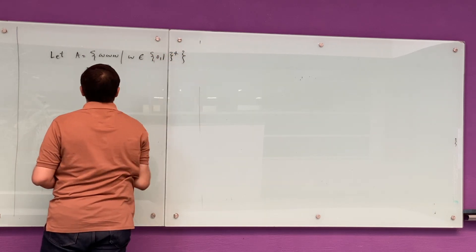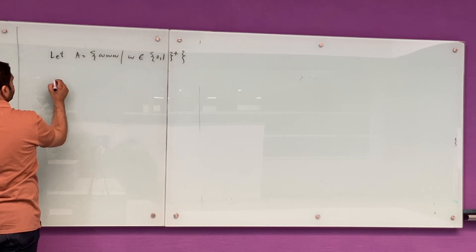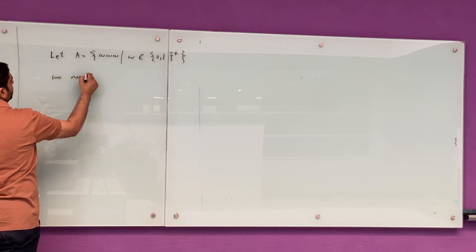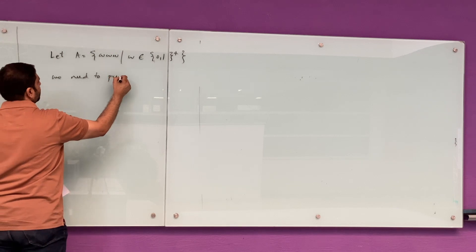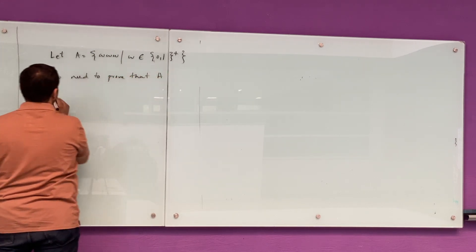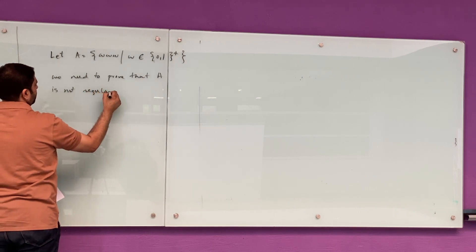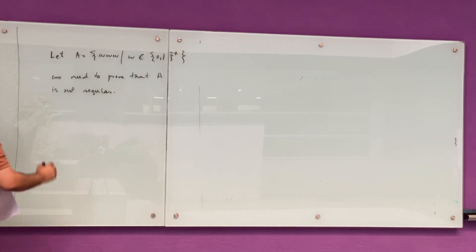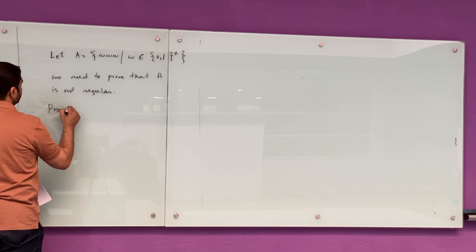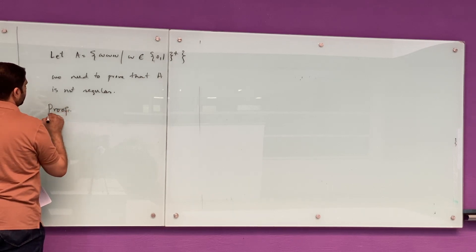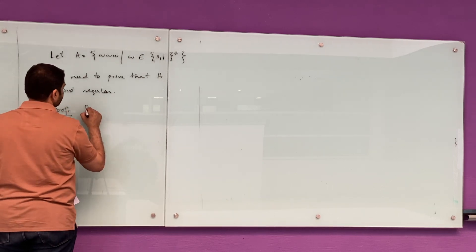Assume we have a language A which equals the set of strings WWW, three copies of W, where each W is a string from the alphabet {0,1}. We need to prove that A is not regular.